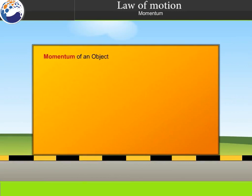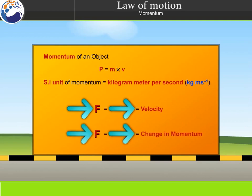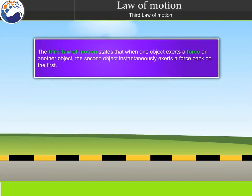Momentum: the momentum P of an object is defined as the product of its mass M and velocity V, that is P equals M multiplied by V. Momentum has both direction and magnitude; its direction is the same as that of velocity. The SI unit of momentum is kilogram meter per second. An unbalanced force brings a change in velocity and therefore also produces a change of momentum.